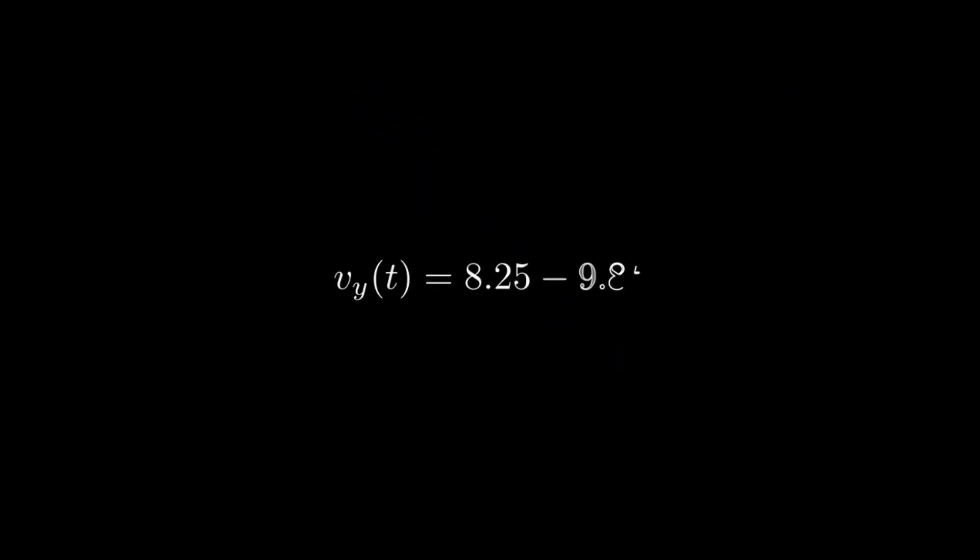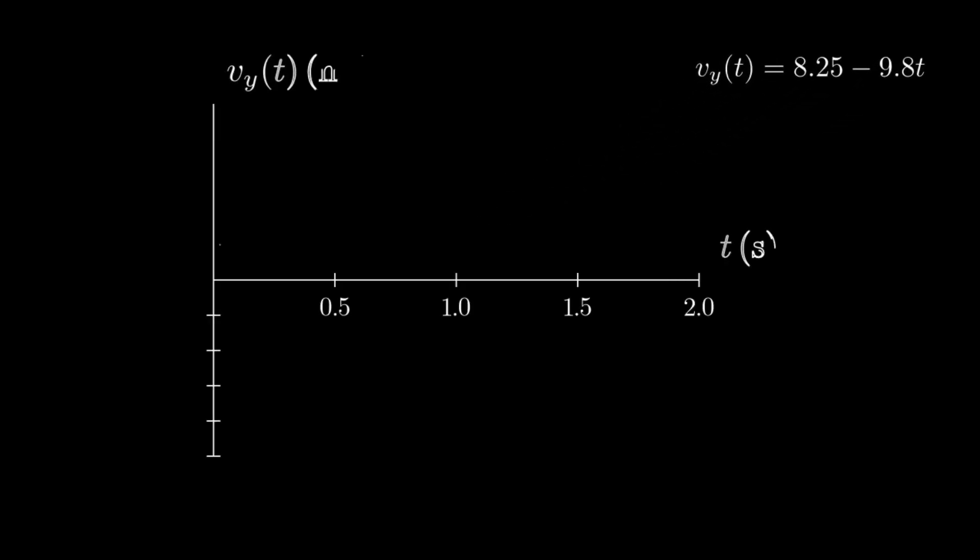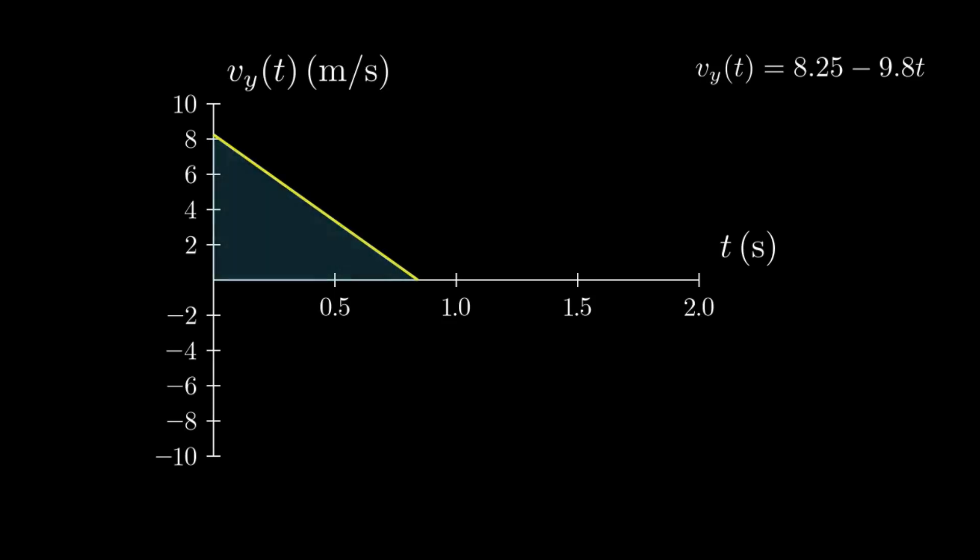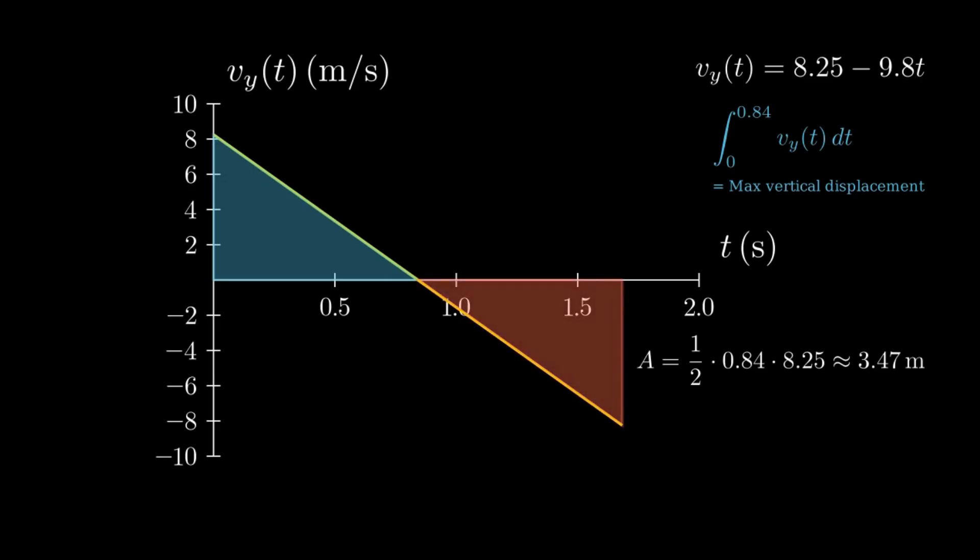We can now graph vertical velocity over time and interpret displacement as the area under its curve. The blue triangle that's shown in this graph represents the upward part of its motion. Its area gives us the maximum vertical displacement as the football is traveling. Once the ball hits its peak, it starts to fall down further. That area is shown in red in the graph. If we include this red triangle in our calculations, the total displacement becomes zero, which makes sense since the ball ends up at about the same height it started at.